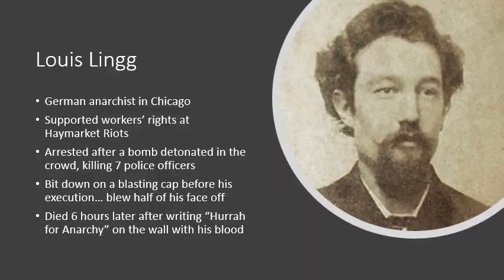What we see is that there was a lot of pushback, and there were people who violently protested against this new way of life. Louis Ling was one of those people — a German immigrant in Chicago, he was an anarchist who believed in having no government. He was supporting workers' rights at the Haymarket Riots, the Chicago workers' riots, and he was arrested after a bomb detonated in the crowd, killing seven police officers.